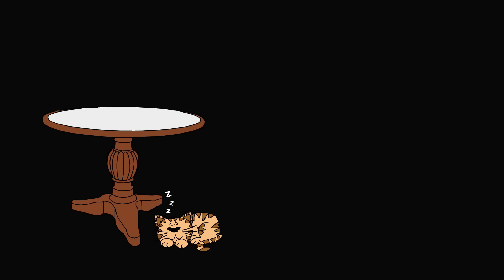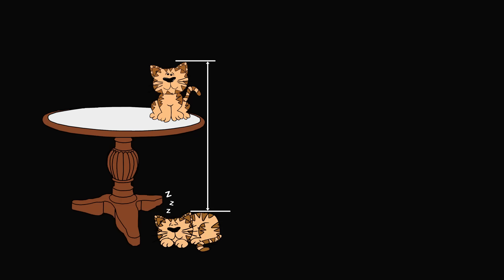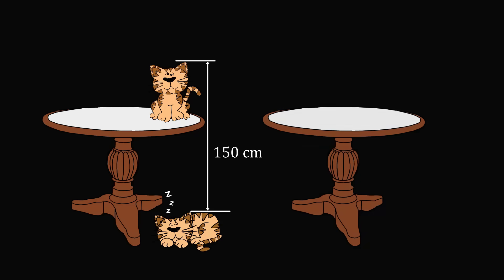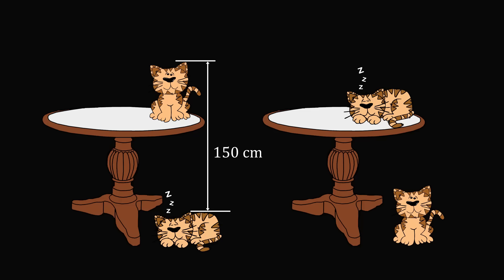So what was the question? We have a table, and at the bottom of the table we have a sleeping cat. On the table we have a sitting cat. The distance between the top of the sleeping cat and the top of the sitting cat is given as 150 centimeters. We also have another diagram with an identical table, but this time the two positions of the cats are reversed. The sleeping cat is on top of the table and the sitting cat is at the bottom. The distance between the top of the sitting cat and the top of the sleeping cat is 110 centimeters.